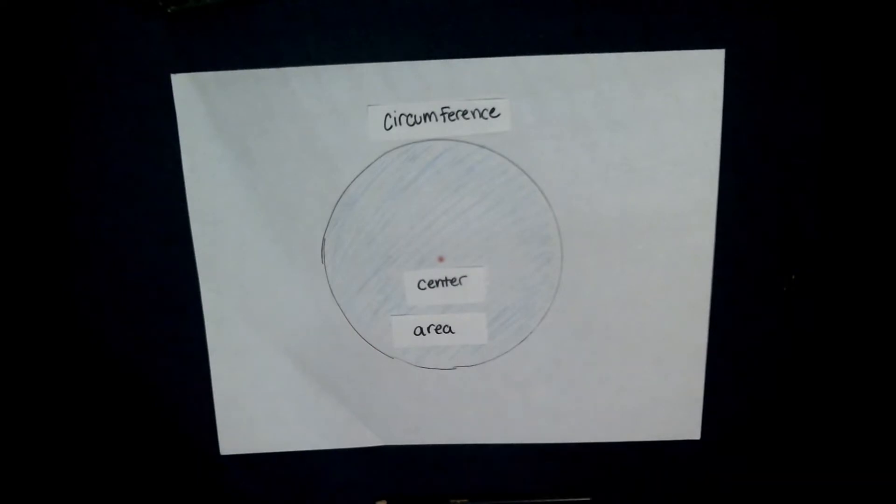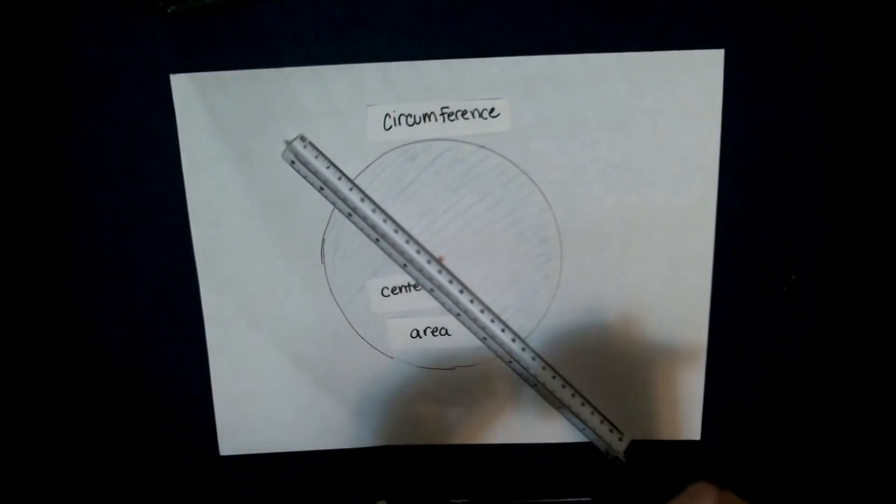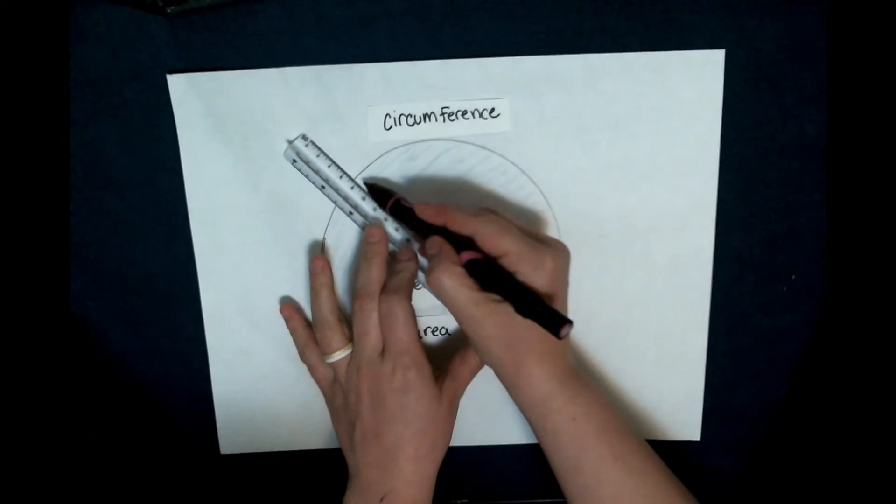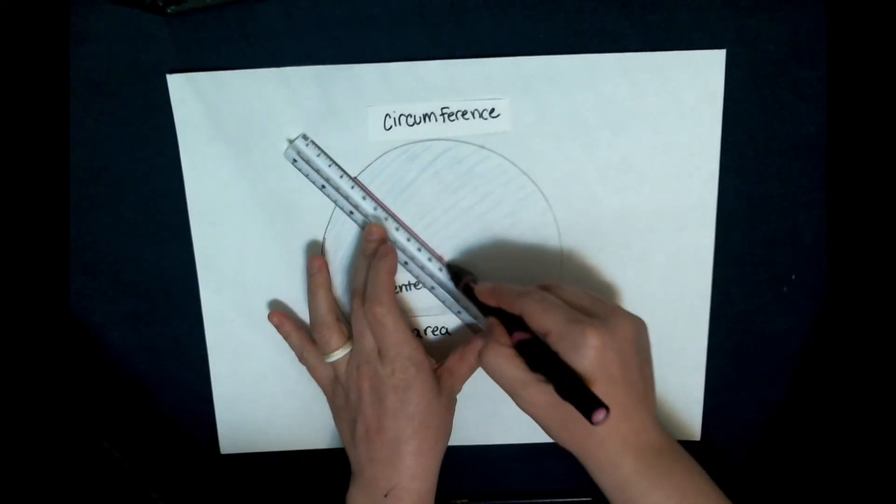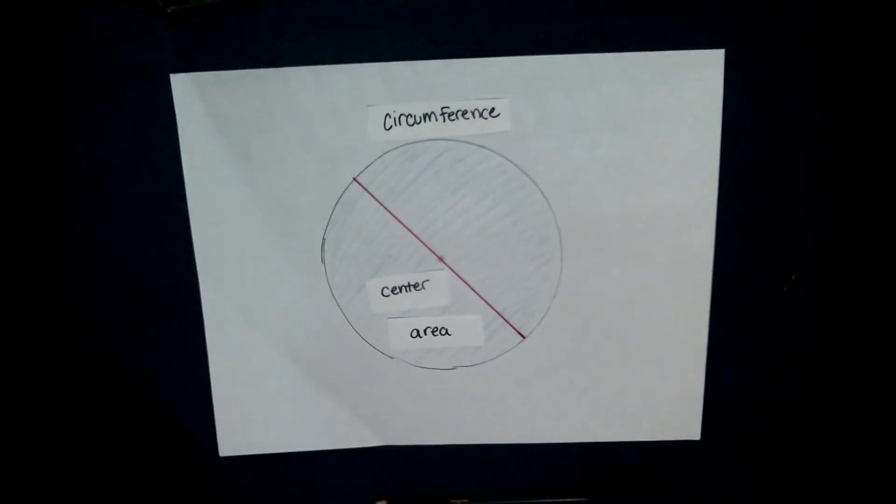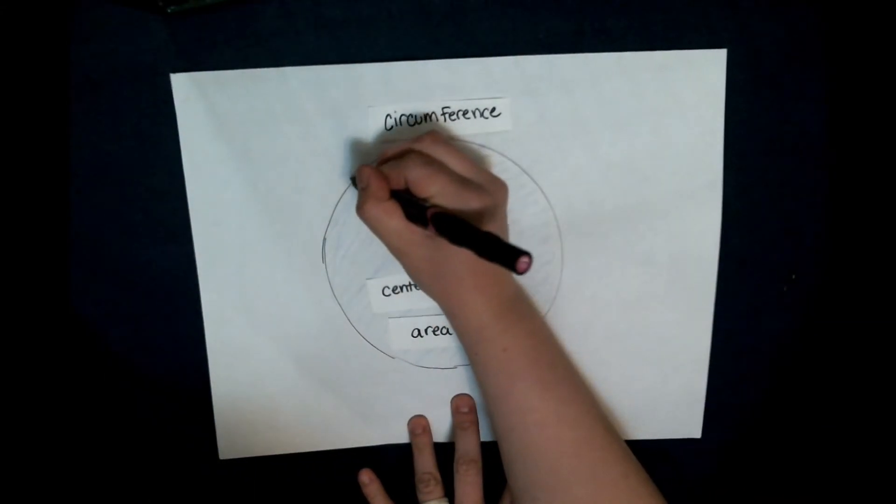I'm going to draw a special line. This special line is going to go through the center of the circle and touch two points of the circumference. Here, it touches the circumference here, and it touches the circumference here.